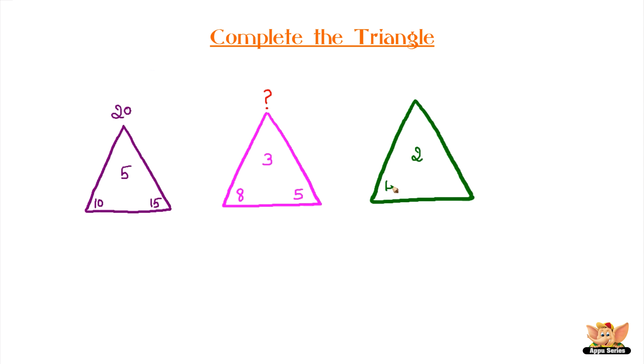Two of the triangles have numbers missing on their vertex. Can you try and figure out what might be the missing number?